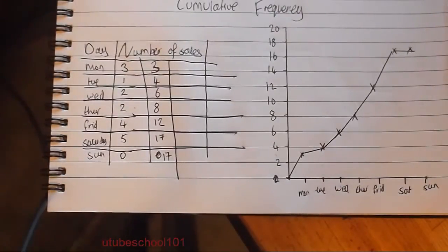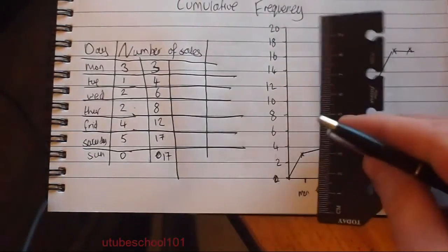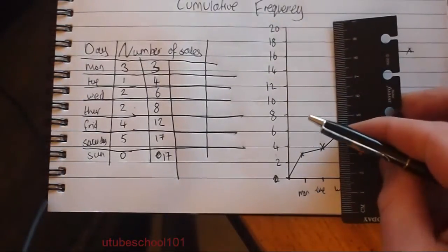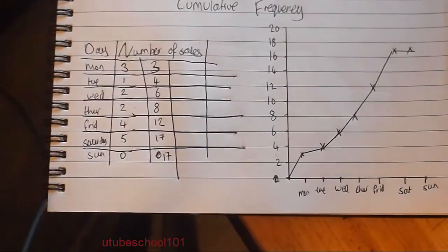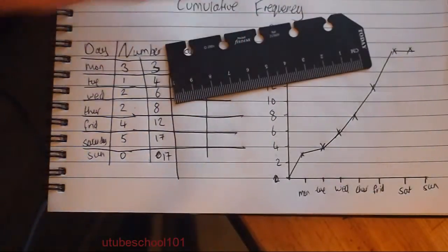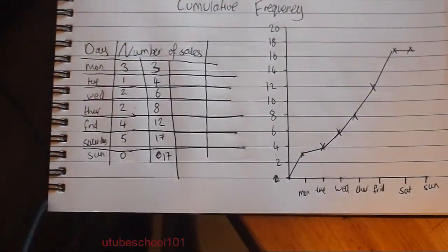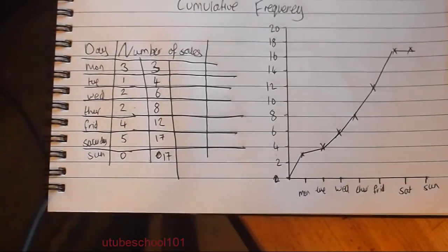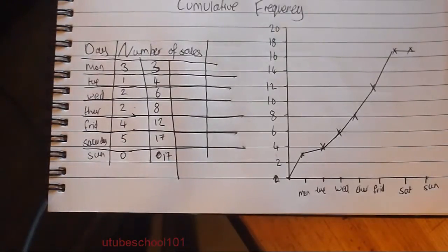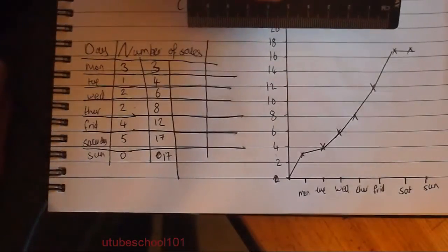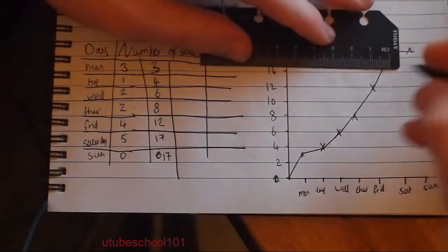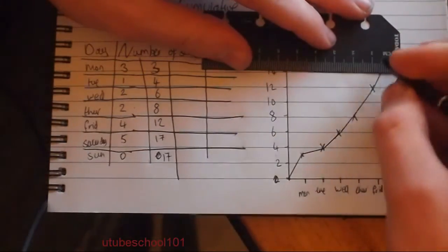What we can do is we can go to Tuesday and see our total sales. We can also use this to see if our sales are on track. So we could have a target — say we need to make 14 total sales by Friday. We go to 14 and draw a line across.